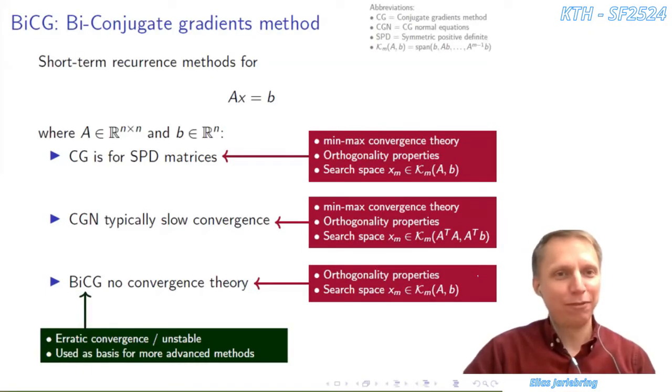Short-term recurrence methods can be very powerful, for example in high-performance computing and linear systems of equations. CG is primarily designed for symmetric positive definite matrices.